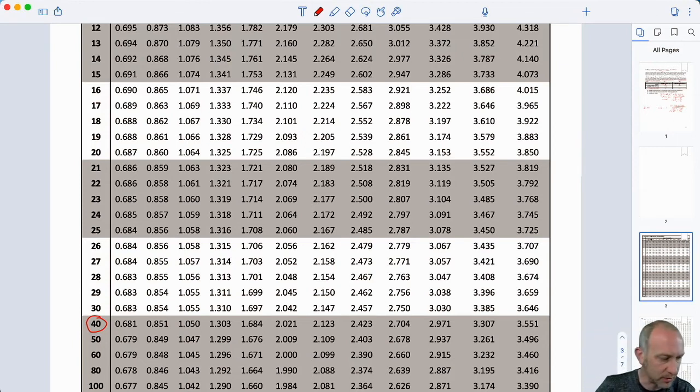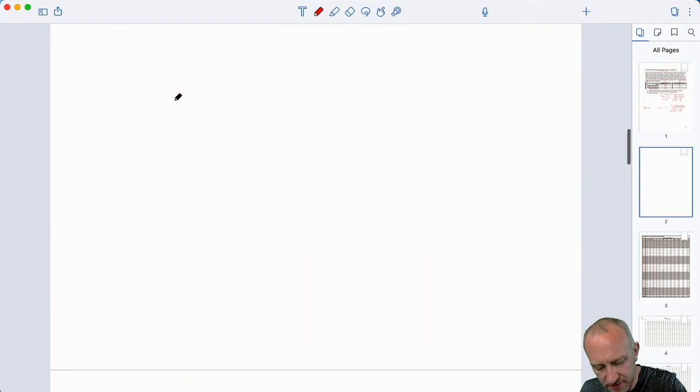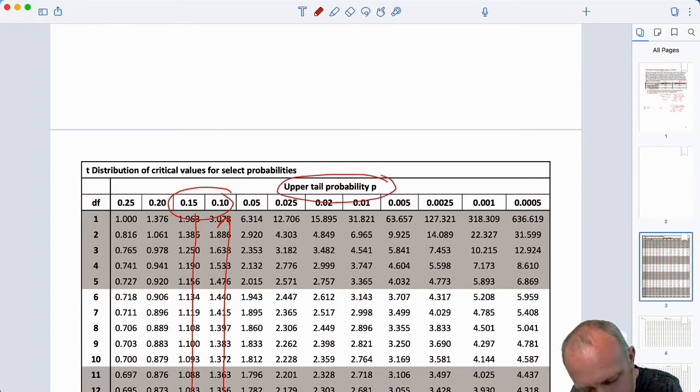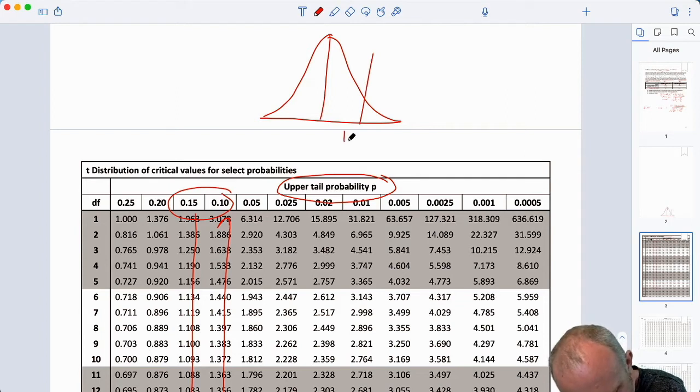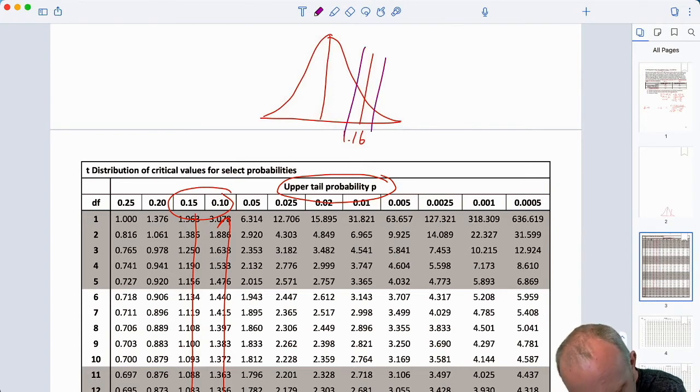I'm looking for my test statistic, which was 1.16. Here I see it's between these two values. If I trace these back up, I have probabilities. I have probabilities, whoops, too far. I have probabilities here between 0.15 and 0.10. Now, of course, these are upper tail probabilities, which means my test statistic is 1.16. 0.15. And these are giving me, on these two sides of those critical values, right, these are giving me upper tail probabilities between 0.1 and this whole region here, 0.15.